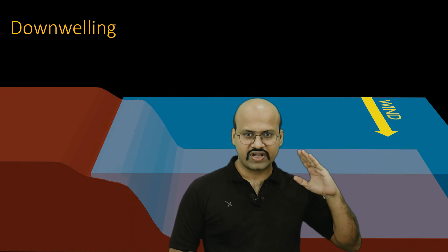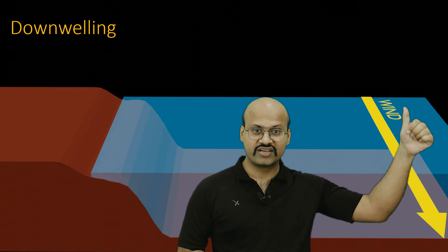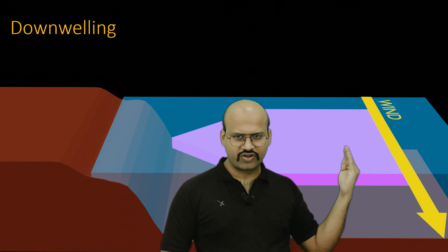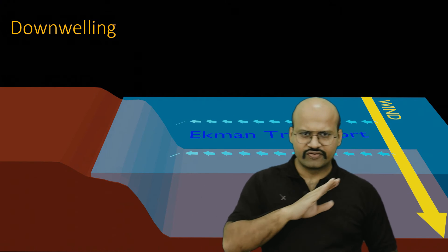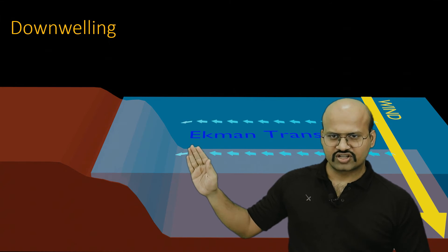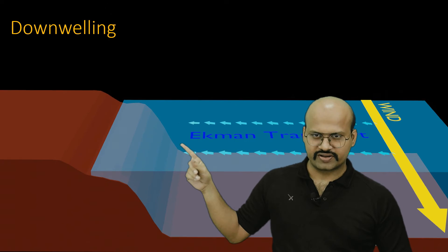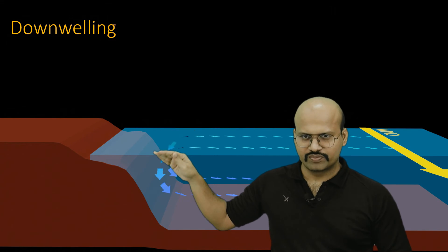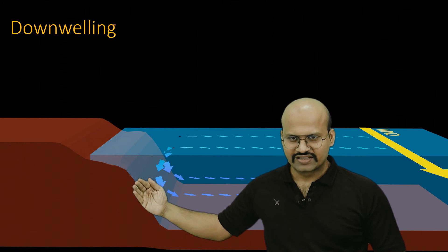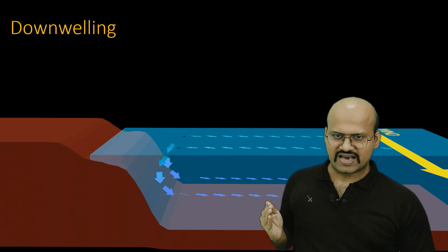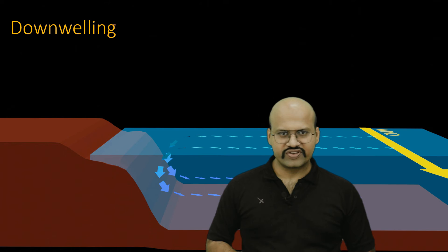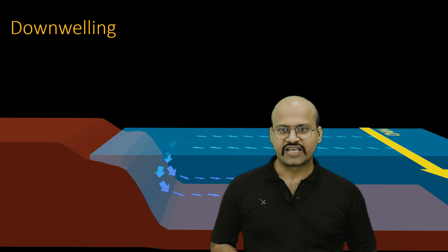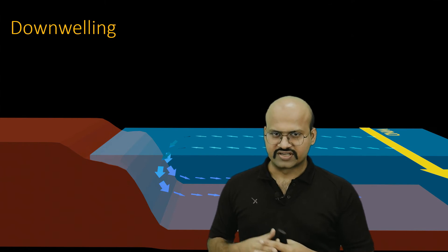Conversely, if wind moves away from the coastline, the net Ekman transport brings water toward the coast, causing an accumulation of water near the shore. This excess water is forced downward, displacing deeper water outward — a process called downwelling at the coastal region.